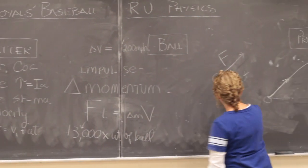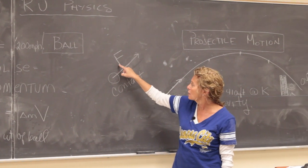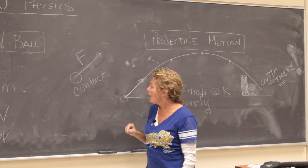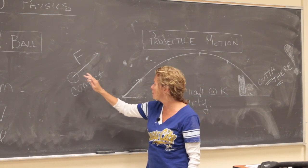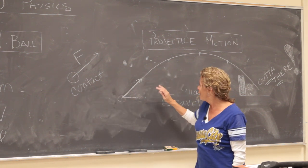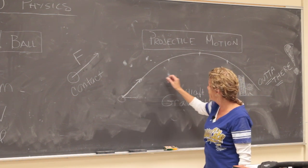Okay so now during the point of contact we have this really big force which we estimated 13,000 times the weight of the ball acting on the ball. As soon as they're out of contact there's no force from the batter anymore. At that point the only force acting on our ball which is right here as it goes around that parabola is gravity.